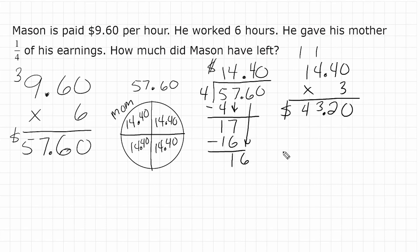All right, now another way that we can approach this problem is we can take the total amount of money that Mason earned, $57.60, and we can multiply it by three fourths written as a decimal. Now remember, his mother received one fourth, which means Mason gets three fourths. And three fourths written as its decimal equivalent is 0.75 or 75 hundredths. So if we multiply this total by 75 hundredths, that is automatically going to give us the amount of money that Mason gets to keep. And it should be equal to $43.20. So let us go ahead and do the math.